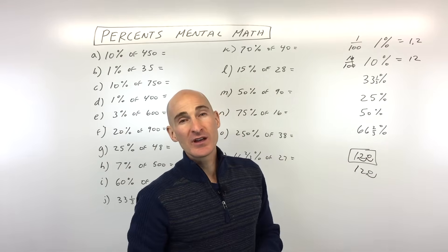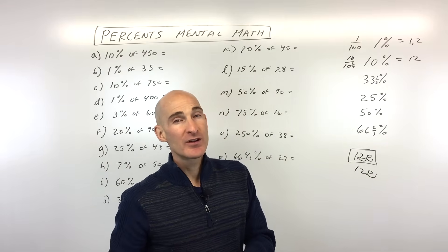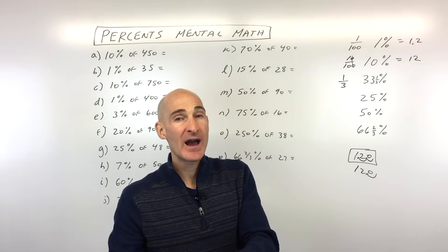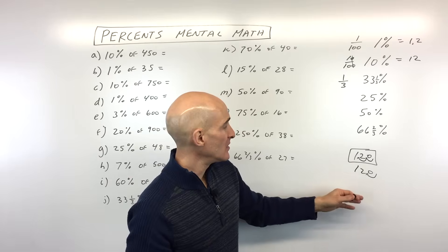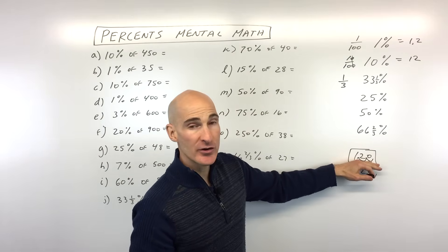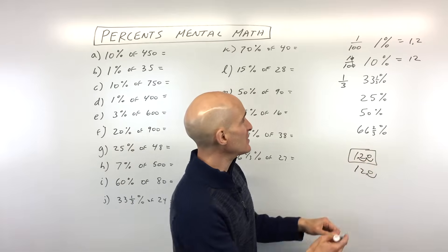Let's take a look at 33 and a third percent. 33 and a third percent, that's one third, right? So one third of something. It means we're dividing it by three into three equal parts. So if we were to take 33 and one third percent of 120, 120 divided by three is 40.